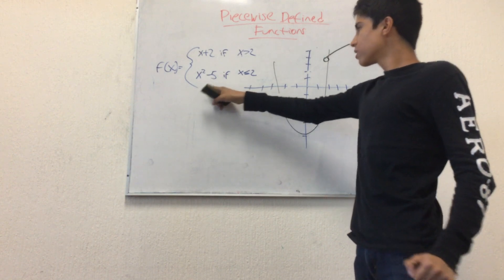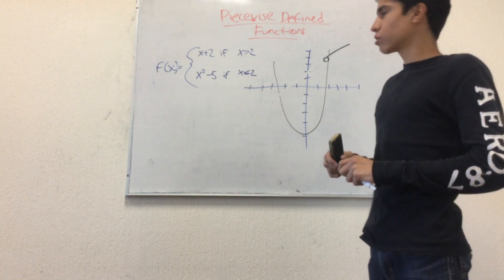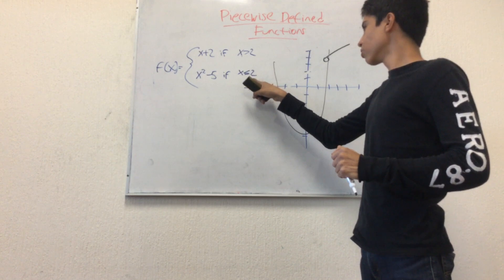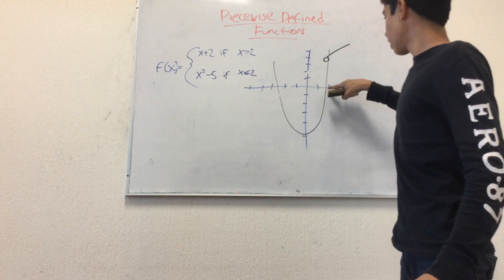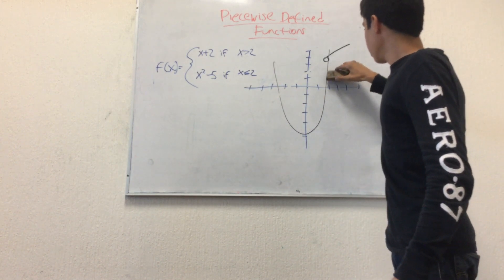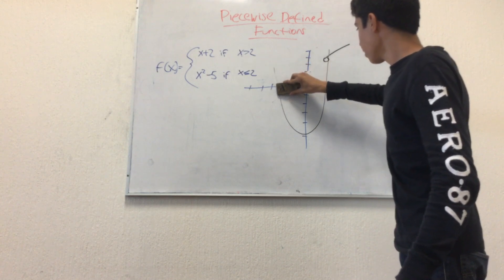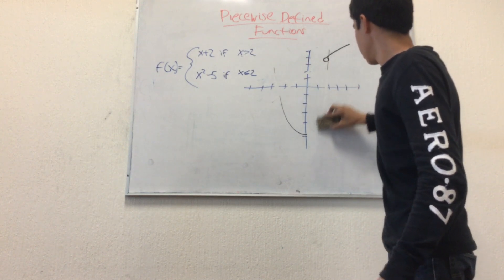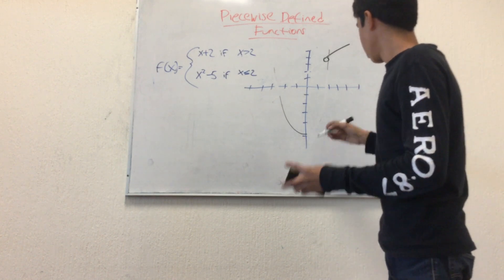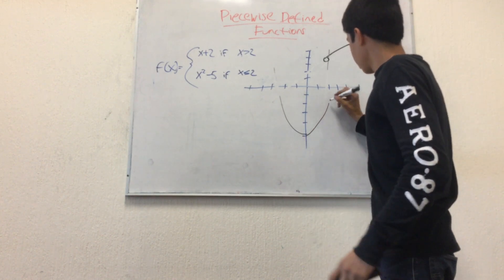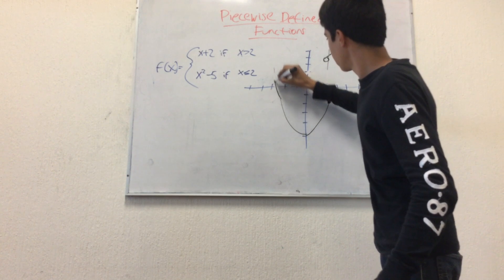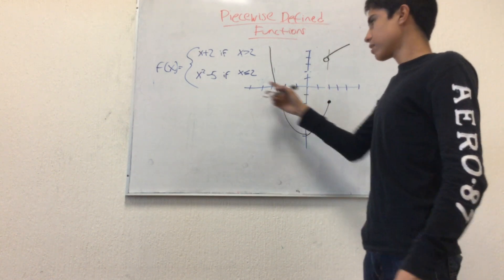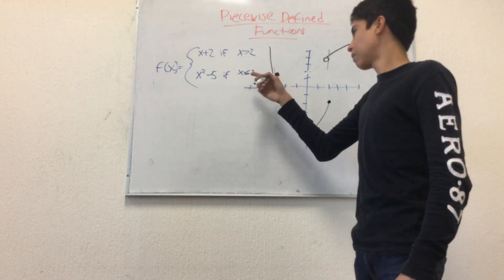For the next one, x has to be less than or equal to 2. So 2 is right here. This part of the graph doesn't exist beyond here. We put a closed dot because it says it is less than or equal — it includes equality.